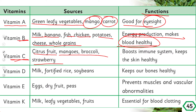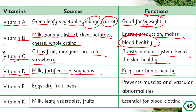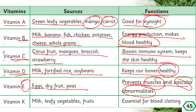Vitamin C boosts the immune system and keeps the skin healthy. Vitamin D is present in milk, fortified rice, and soya bean — it makes your bones strong and keeps them healthy. Vitamin E is present in eggs, dry fruits, and peas — it prevents muscle and vascular abnormalities, meaning it protects our muscles and blood vessels. Vitamin K is present in milk, leafy vegetables, and fruits — it is essential for blood clotting.